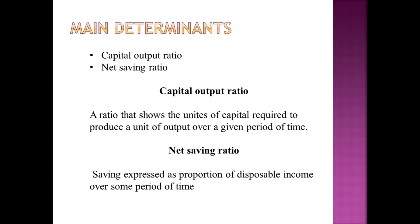Students, the main determinants you need to keep in mind are: first, the capital output ratio, and second, the net saving ratio. The capital output ratio shows the units of capital required to produce a unit of output over a given period of time — that is, how much capital is needed to produce one unit of output. This is our capital output ratio.